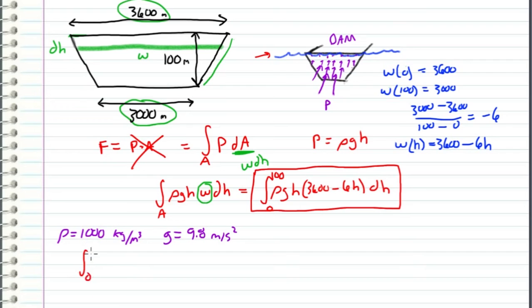We get the integral from 0 to 100 of 9800 times (3600h - 6h²) dh. We can bring this constant out front and just integrate this portion.